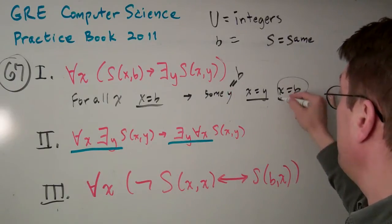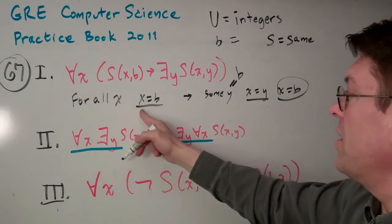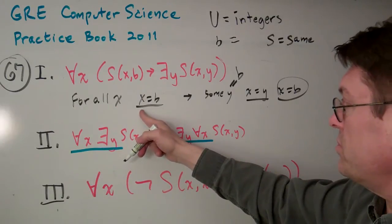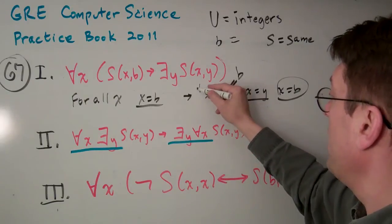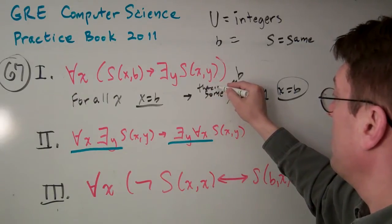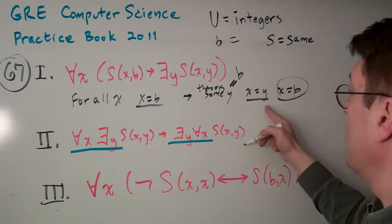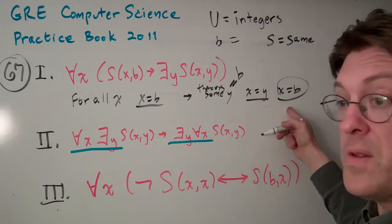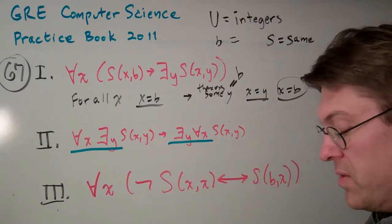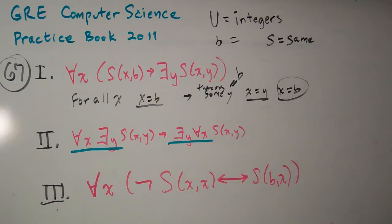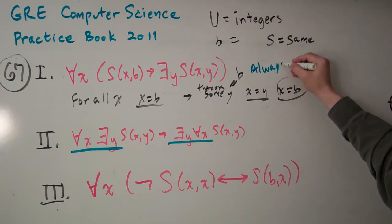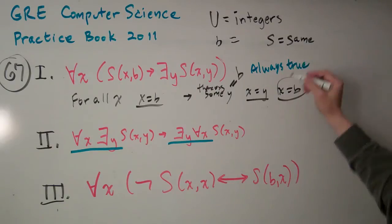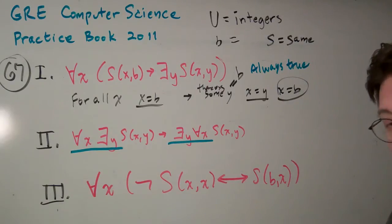So we're basically just saying that for all X, if X equals B, there exists some Y where X equals Y and it's X equals B. That's the one it is. So basically, this is always true. Because you can always just put B in for Y and you've got a true statement, no matter what the universe, no matter what the interpretation of S.